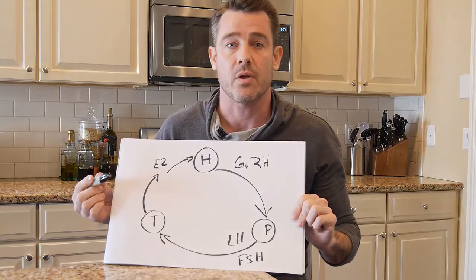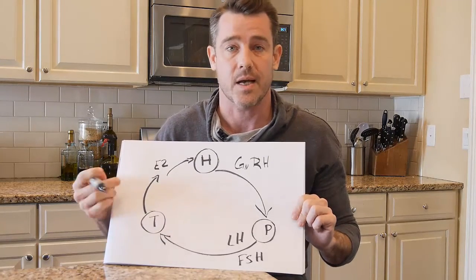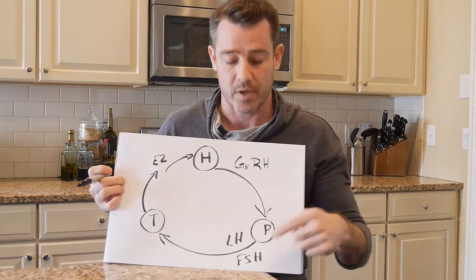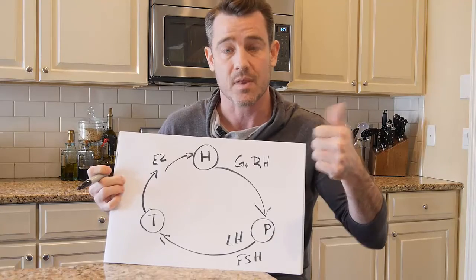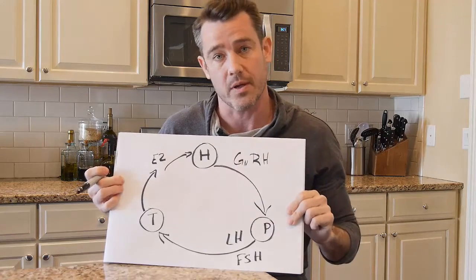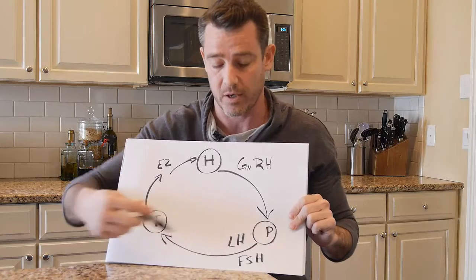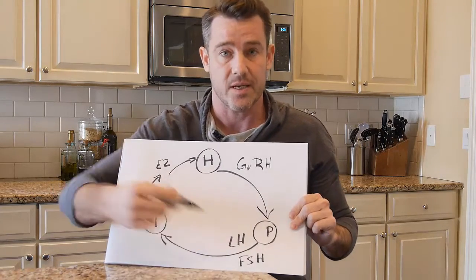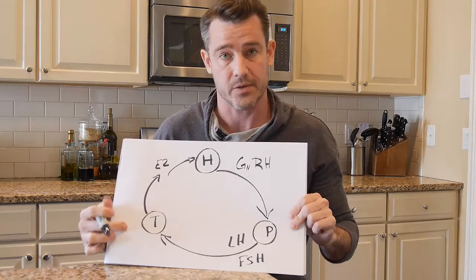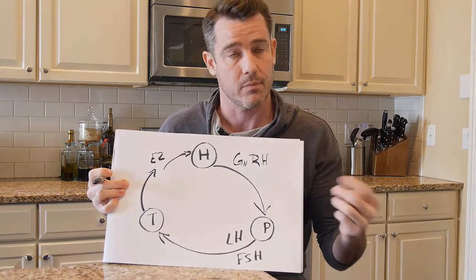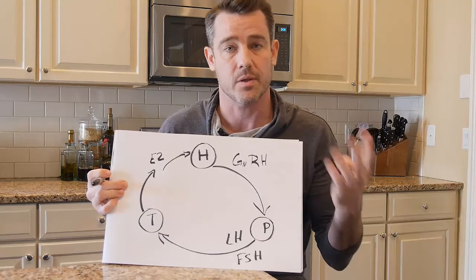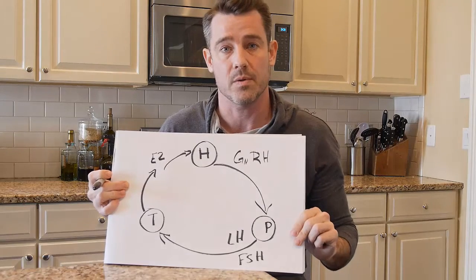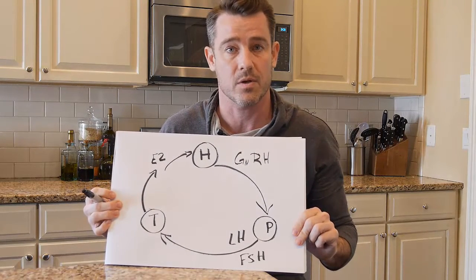This is why every doctor should be looking at not only free and total testosterone when running initial blood work on a patient, but also what LH and FSH are. Because if a patient's LH and FSH are high and testosterone is low, the problem most likely resides at the testicular level. If LH and FSH are low and testosterone is low, there's a good chance the problem exists in the signaling chain, and if you beef up these pituitary hormones, testosterone will respond in a corresponding fashion.